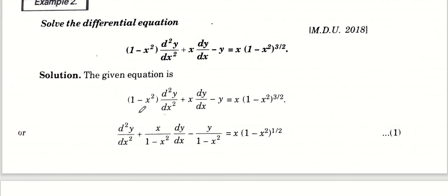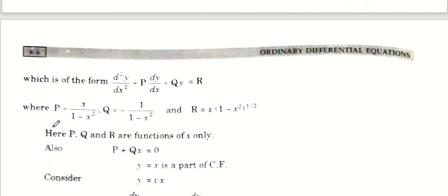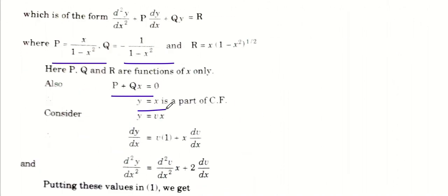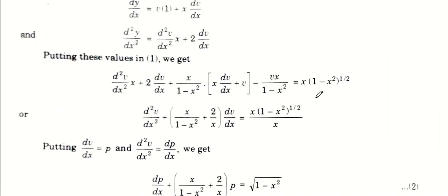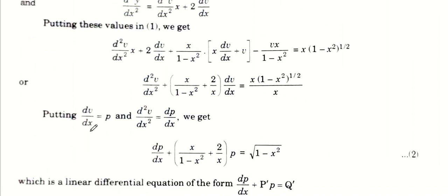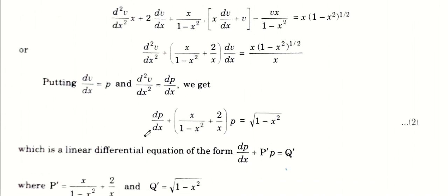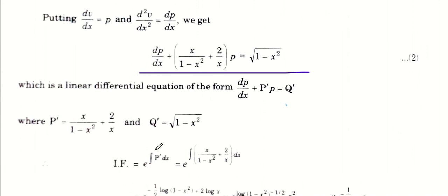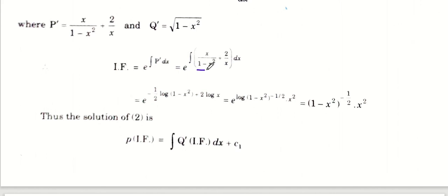Second example: सबसे पहले divide करके standard form बनाएं। P और Q की value आई — clearly P + Qx = 0, तो U की value आई। Y = U·V का derivative करके given differential equation में values put करी। Like terms के coefficients collect करने पर V वाली terms cancel हो गईं। फिर dV/dx को P put करने पर linear differential equation बन गई।